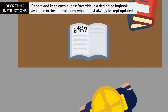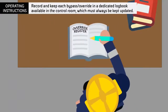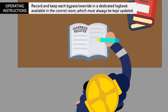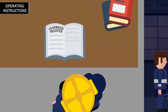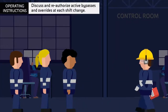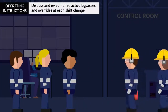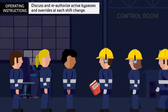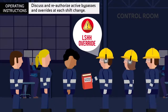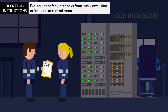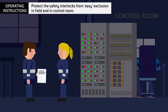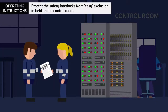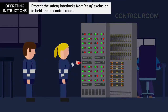Record and keep each bypass override in a dedicated logbook available in the control room, which must always be kept updated. Discuss and reauthorize active bypasses and overrides at each shift change. Protect the safety interlocks from easy exclusion in field and in control room.